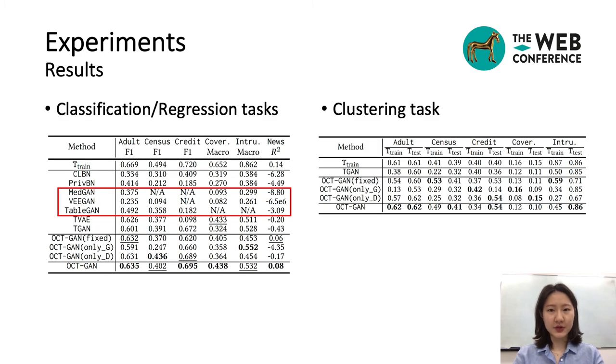For classification task, some GAN models failed to calculate the F1 score appropriately due to severe mode collapse. OCTGAN, including our ablation models, achieved the best F1 scores on all of the cases.